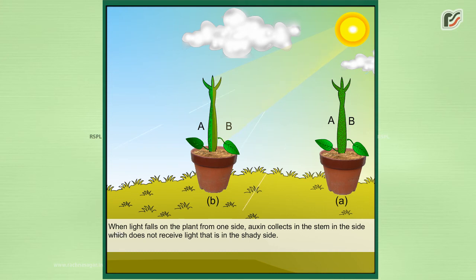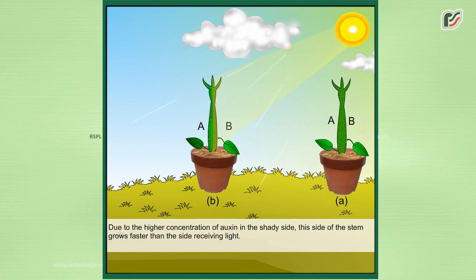in the shady side. Due to the higher concentration of auxin on the shady side, this side of the stem grows faster than the side receiving light.